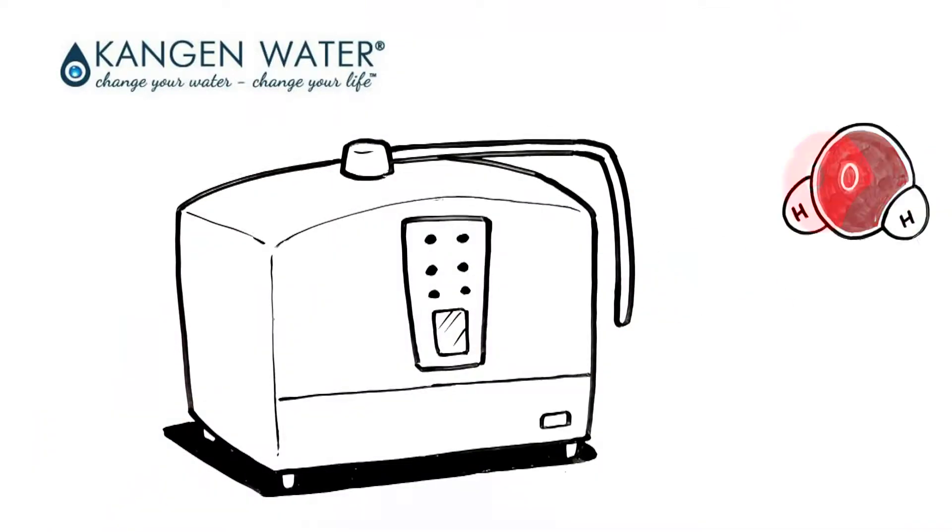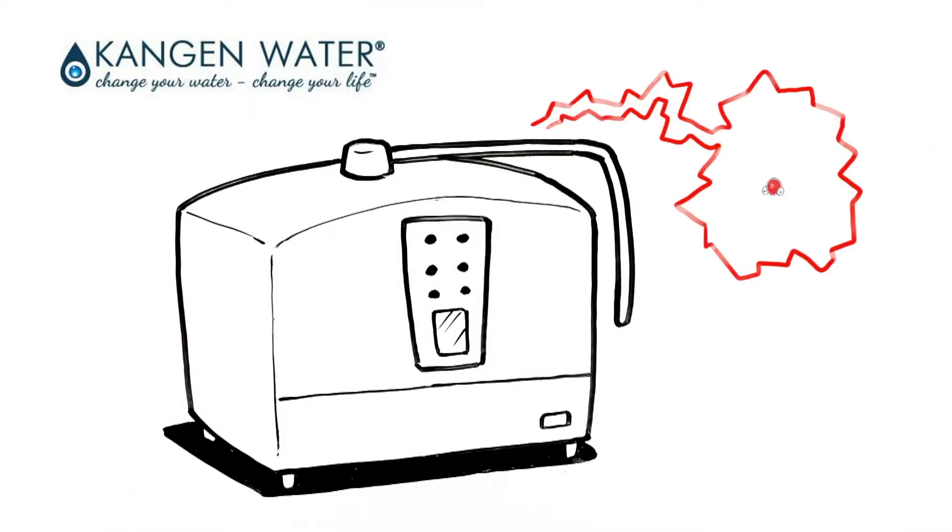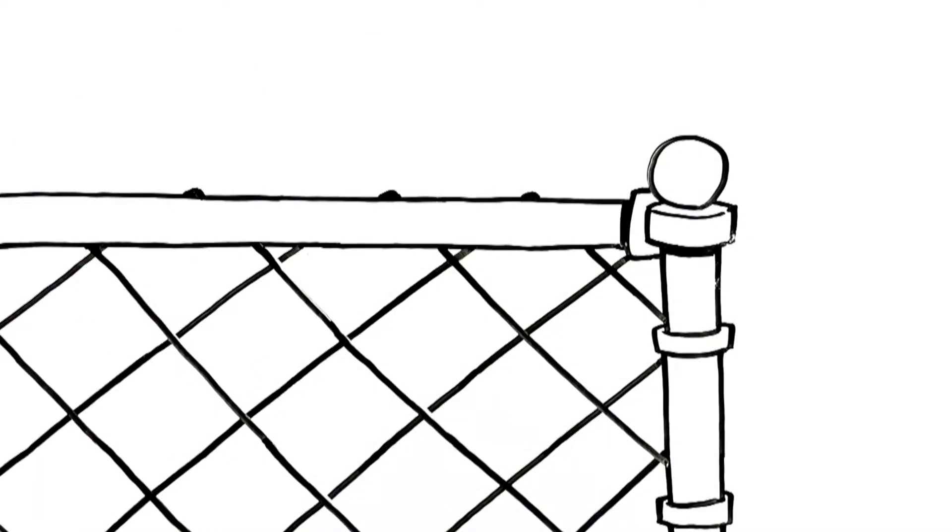The KanGen system not only filters all the junk out of your tap water, it also shrinks water molecules. Because the water is micro clustered in this way, all your cells and body systems absorb the water that much faster.